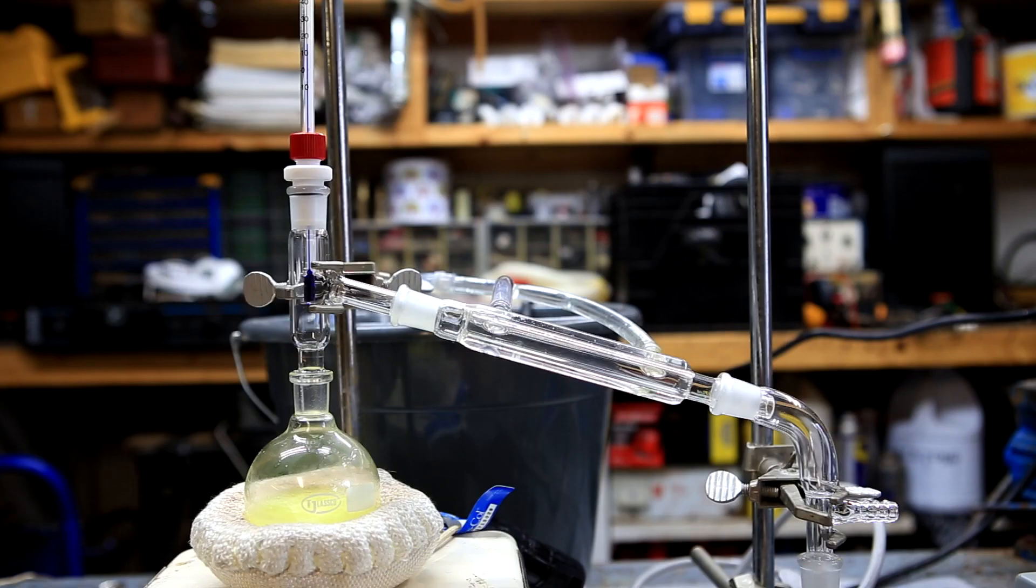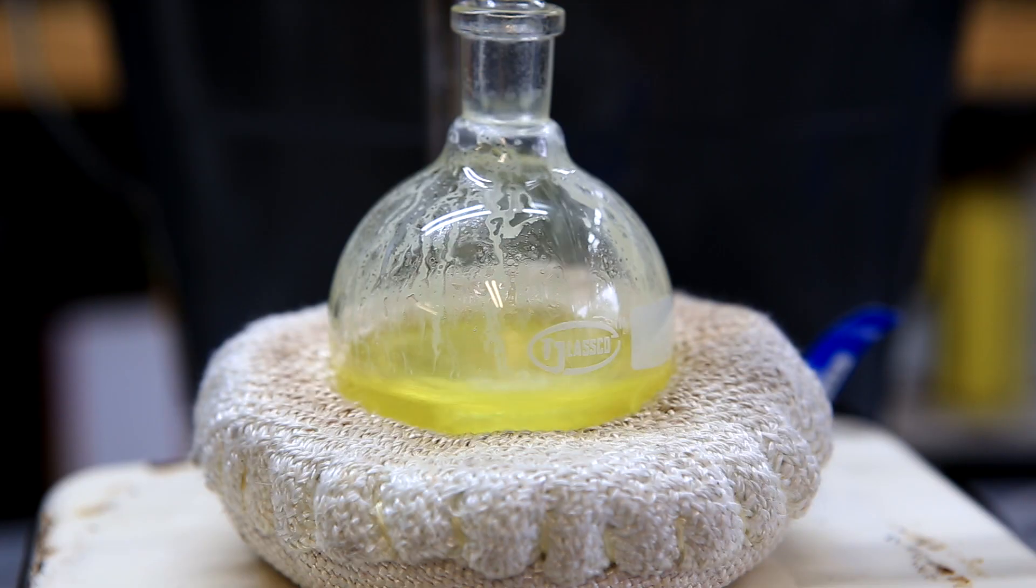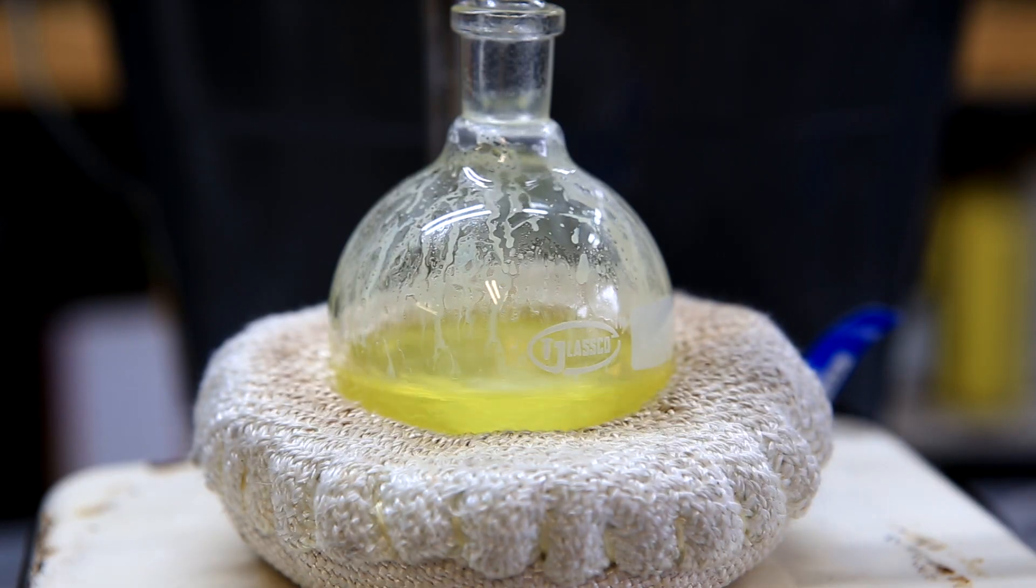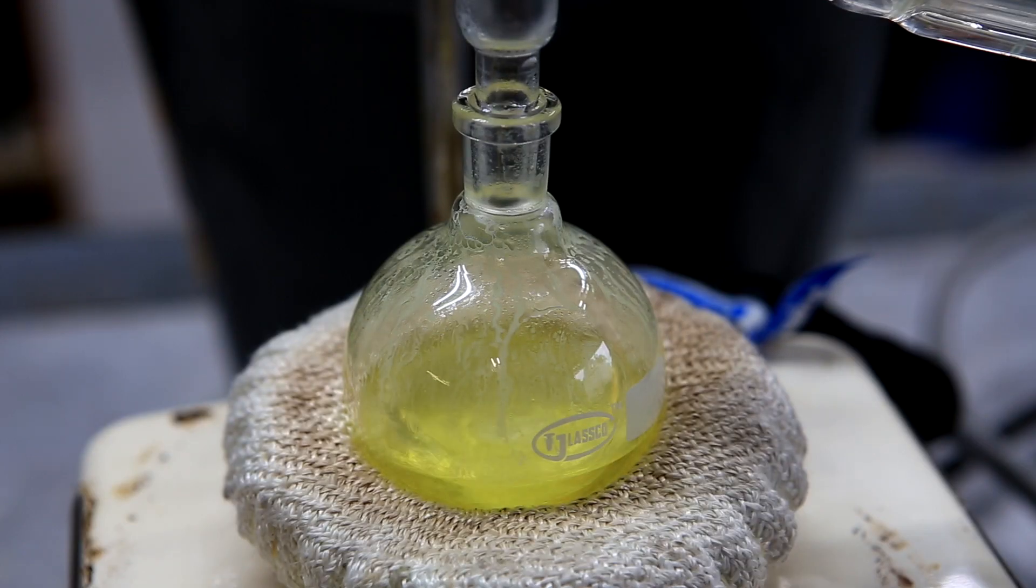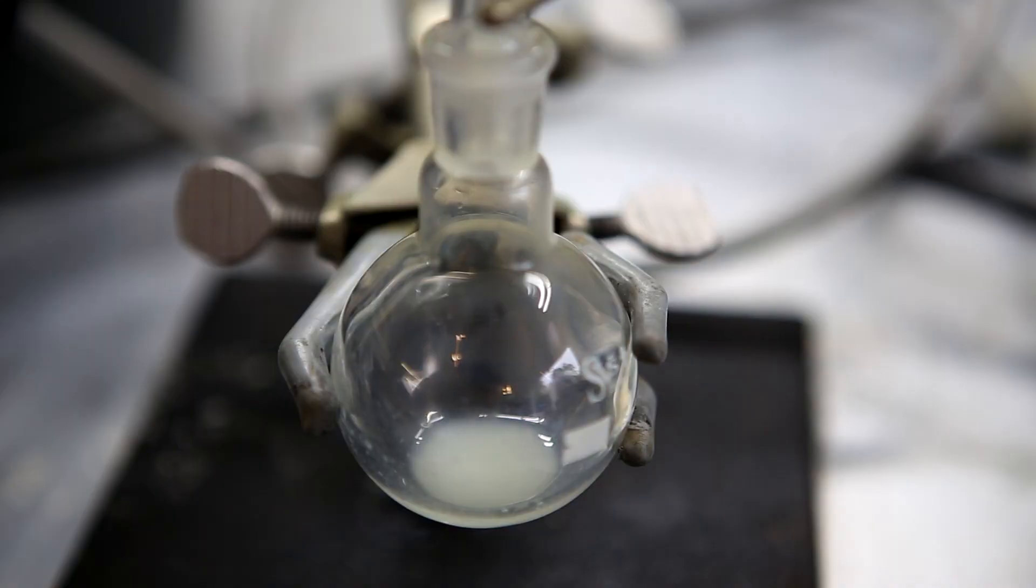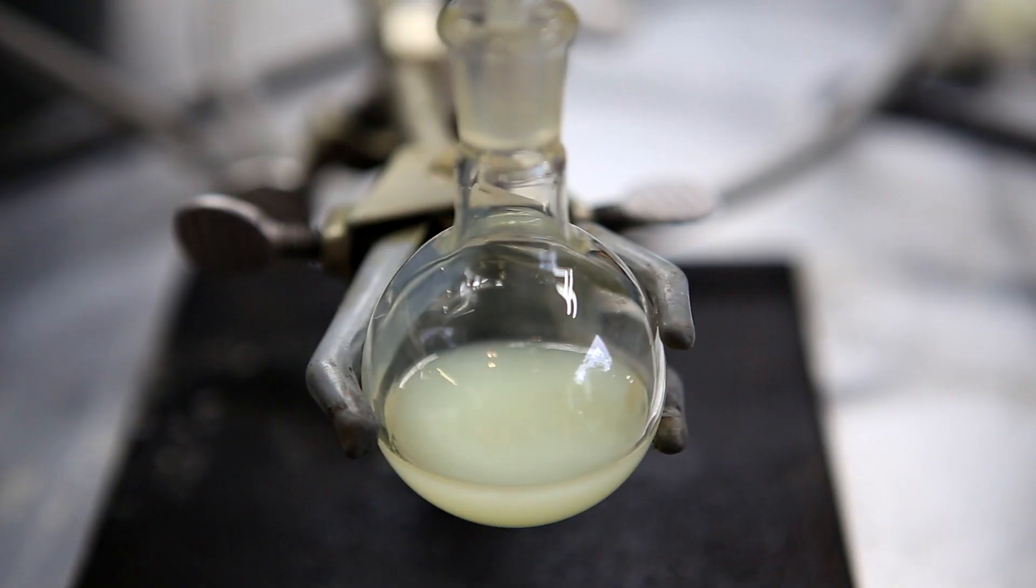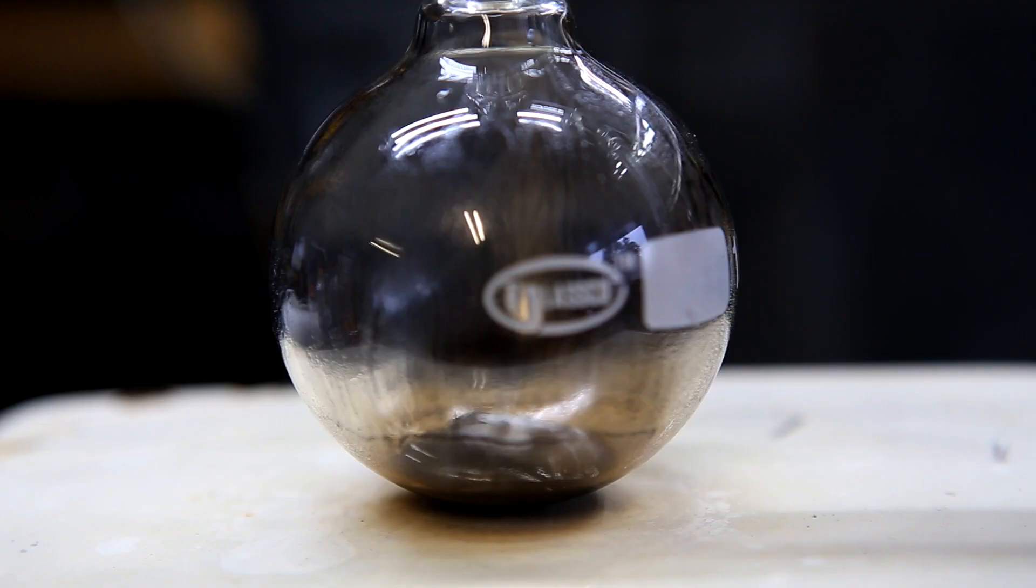The fraction that started coming over at around 208 degrees Celsius was collected. For safety reasons do not let the distillation flask get any hotter than 214 degrees Celsius. Also it's important to not distill until dryness. As the distillate came over it should be a cloudy white color because there's still water present in it. In the distillation flask we're left with a thick brown goo.